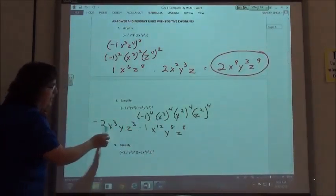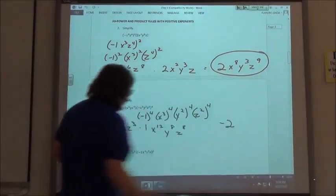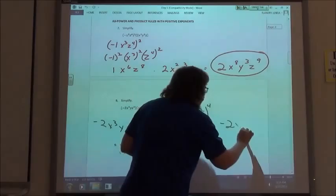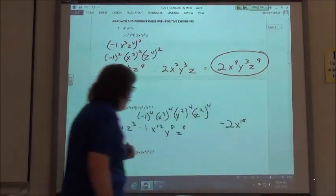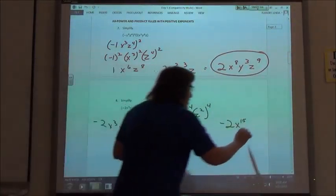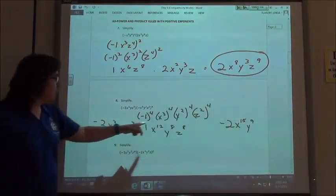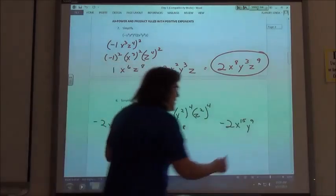so negative 2 times 1 is negative 2. x to the third times x to the twelfth, I add my exponents, x to the fifteenth. y times y to the eighth would be y to the ninth, and z to the third times z to the eighth would be z to the eleventh.